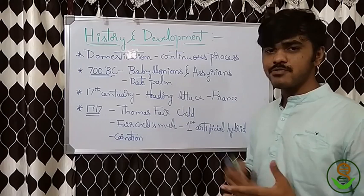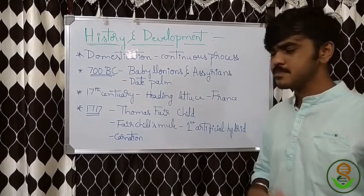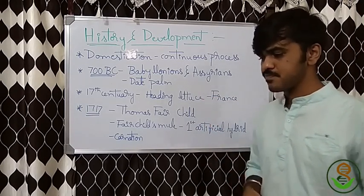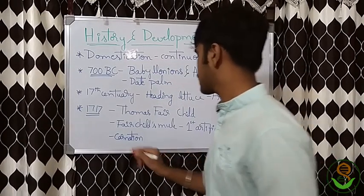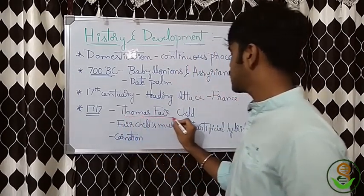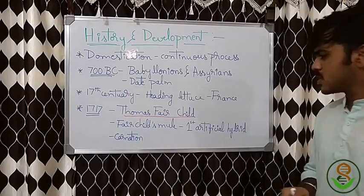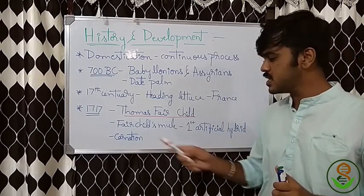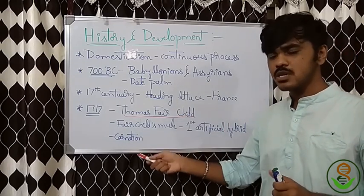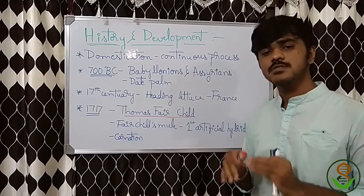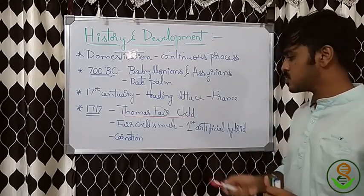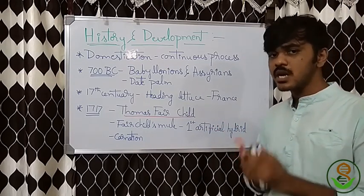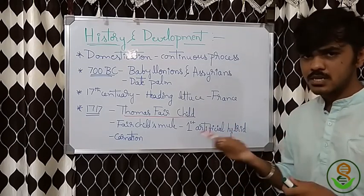From 1717 onward, we have many literatures speaking about breeding. In 1717, Thomas Fairchild developed the first artificial hybrid with respect to carnation. It is called Fairchild's Mule, and it is the first artificial hybrid developed in history as documented in literature.